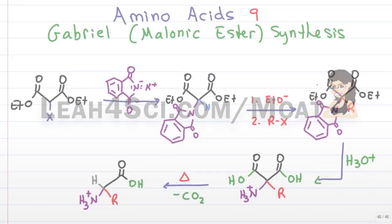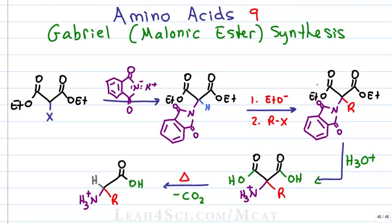In the last video, we looked at Strecker synthesis for creating an alpha amino acid — we started with an aldehyde and added the alpha amine and alpha carboxy. In this video, we're going to look at the Gabriel Malonic Ester synthesis, which is another method for synthesizing an alpha amino acid, but this time we're starting with the backbone and adding first the nitrogen, then the R group. As the name implies, Gabriel Malonic Ester synthesis is a combination of the Gabriel Amine synthesis followed by Malonic Ester synthesis, and together we're going to form that amino acid.